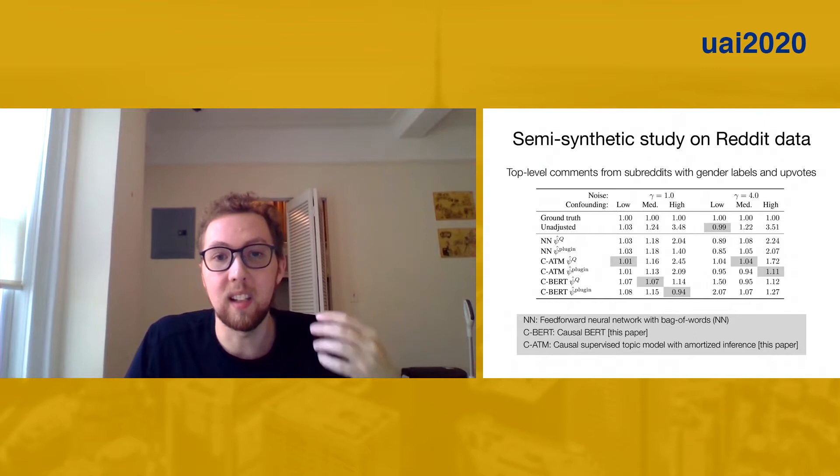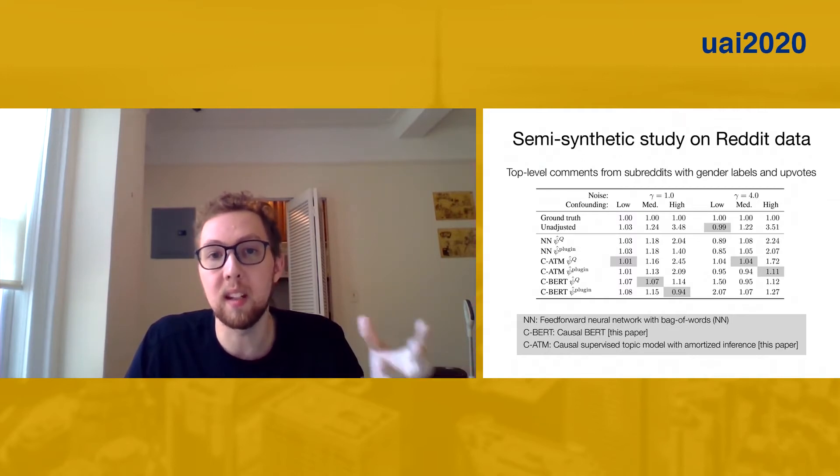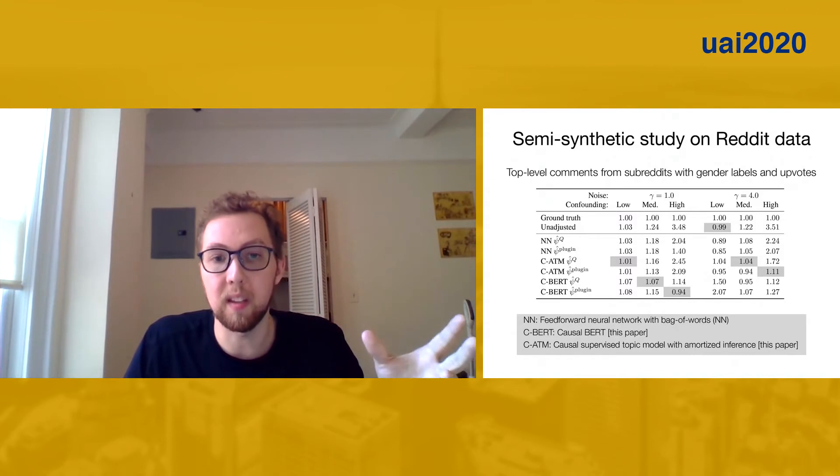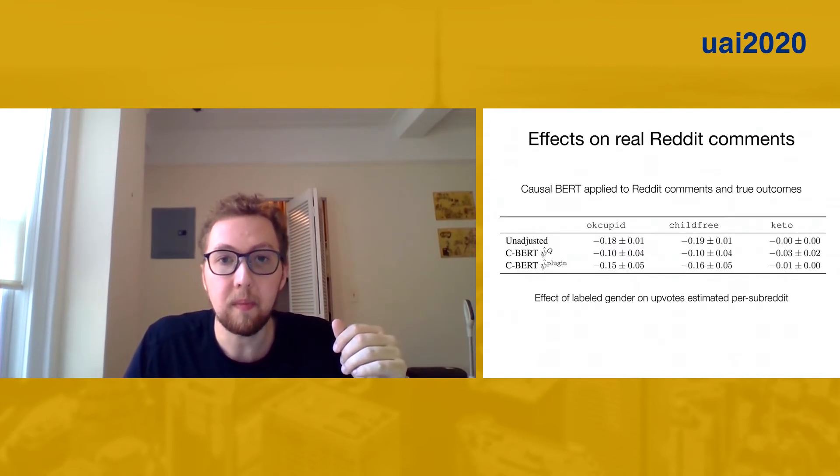Here is the upshot of the semi-synthetic evaluation environment. This basically just says if you use these neural model type things in order to do the causal adjustment, then even in situations where you have a lot of noise and a lot of confounding and the naive thing would be completely misleading, these neural adjustment methods still work quite well.